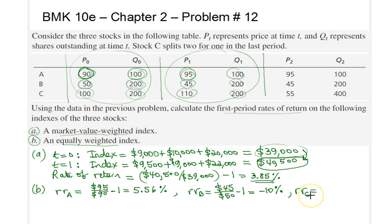Therefore the rate of return for an equally weighted index is equal to the average of the returns for individual separate securities.